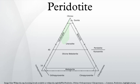Peridotite is derived from the Earth's mantle either as solid blocks and fragments, or as crystals accumulated from magmas that formed in the mantle. The compositions of peridotites from these layered igneous complexes vary widely, reflecting the relative proportions of pyroxenes, chromite, plagioclase, and amphibole.